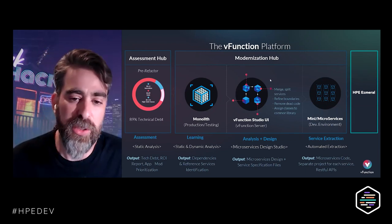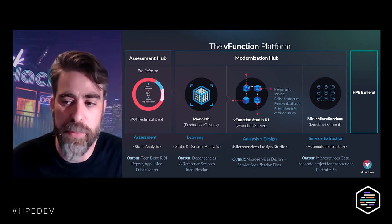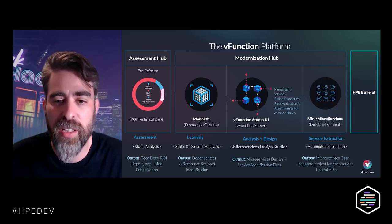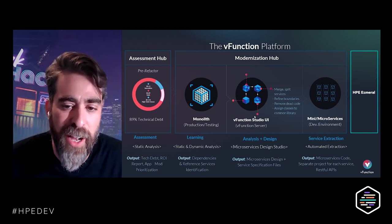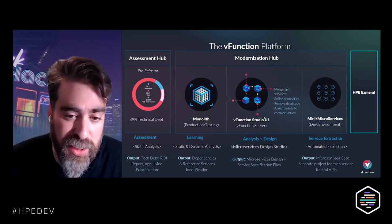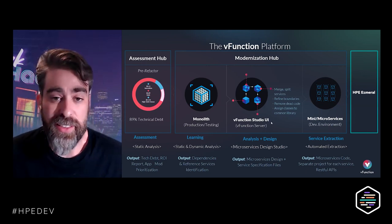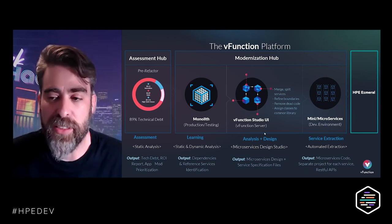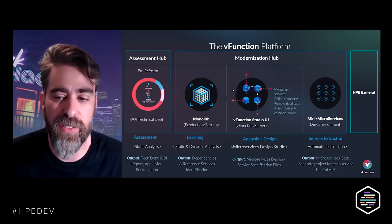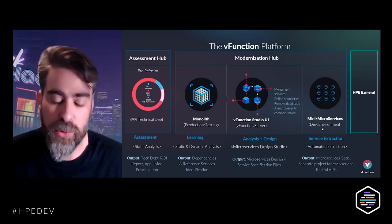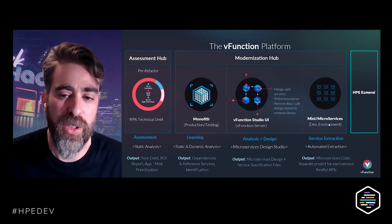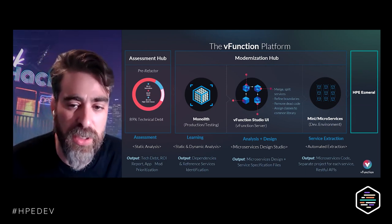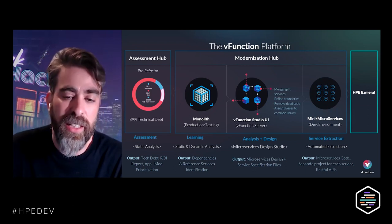With this information — the assessed data, the solution of the optimization problem, and all the hints the AI gets about what is and isn't of a domain — we present this to an architect who can then interact with the system and define their architecture based on the initial suggestion by the vFunction server. Once the architect is happy with this architecture, they can download service specification files — basically recipes on how to create the services — and run those recipes on development machines through another tool we supply. That takes the original source code and creates a new service out of it, like a Lego rebuild using your original building blocks, the classes.